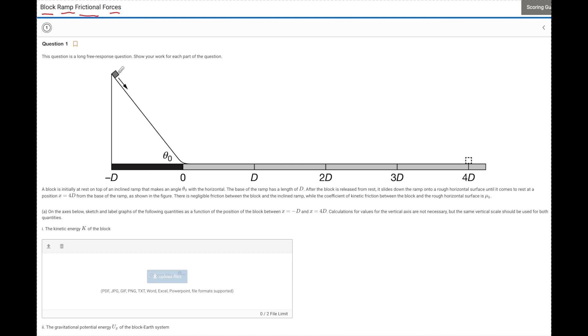This is going to deal with a block coming down some frictionless incline and then sliding to a stop way over here in 4D. They give us a couple of variables. The angle is theta initial, the lengths are D, it's released from rest, rough surface so there's friction here, but no friction on the incline because they say negligible.